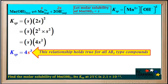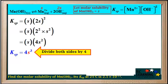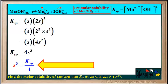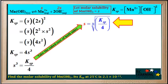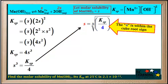Now we'll proceed to solve for the molar solubility. We'll start by solving for S³ — to do this, we divide both sides of the equation by 4, giving us S³ equals Ksp over 4. Our next step is to solve for S by taking the cube root of both sides, giving us S equals the cube root of Ksp over 4. Note that the 4 is within the cube root sign — S is the cube root of the whole fraction, Ksp over 4.